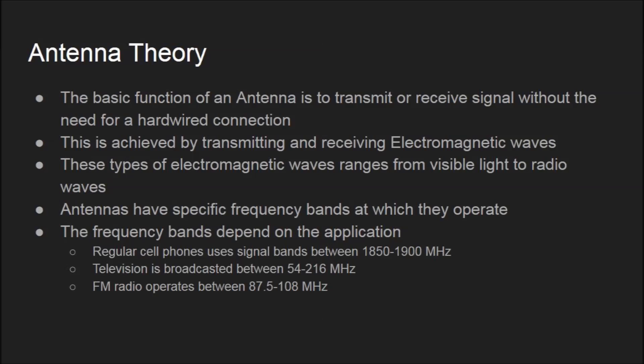For example, regular cell phones use signal bands between 1850 and 1900 megahertz. Television is broadcasted between 54 and 216 megahertz. FM radio operates between 87.5 and 108 megahertz. These are just a few examples of different frequencies at which antennas operate.